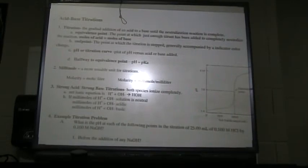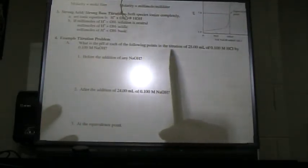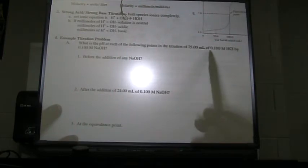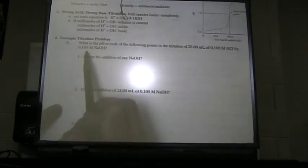Okay, I think we're ready here. This is acid-base titrations, number four, example titration problem of a strong acid titrated by a strong base. What's the pH at each of the following points in the titration of 25 mL of 0.1 molar HCl by 0.1 molar NaOH?